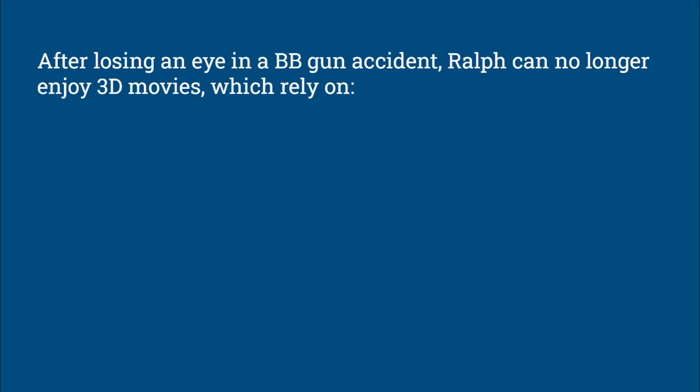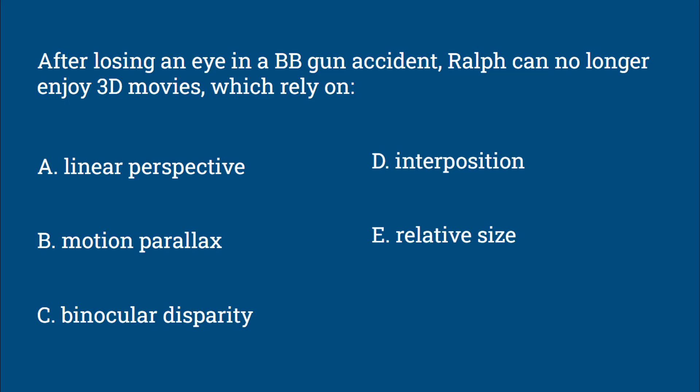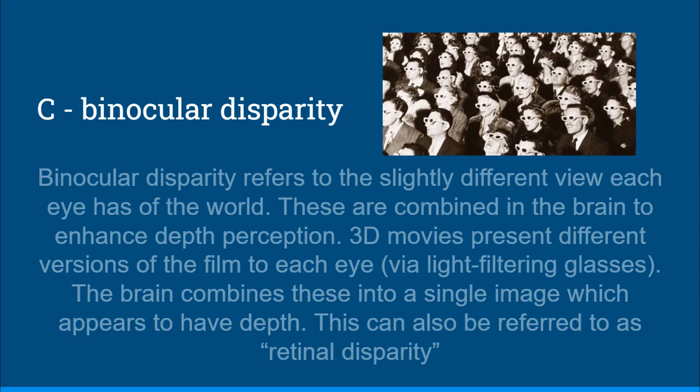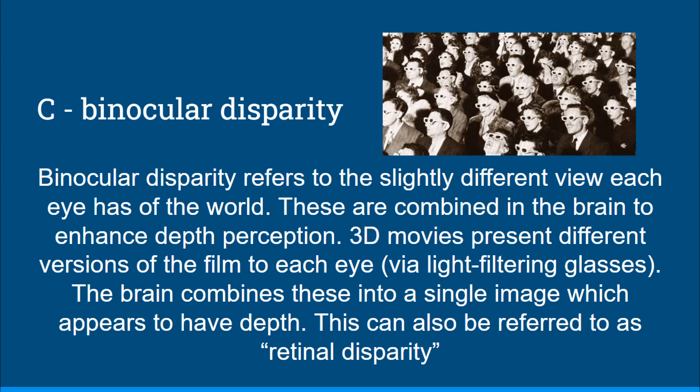After losing an eye in a BB gun accident, Ralph can no longer enjoy 3D movies, which rely on linear perspective, motion parallax, binocular disparity, interposition, or relative size. The answer is C, binocular disparity. Binocular disparity refers to the slightly different view each eye has of the world, which are combined in the brain to enhance depth perception. 3D movies present different versions of the film to each eye using light-filtering glasses, and the brain combines these into a single image that appears to have depth. This can also be referred to as retinal disparity.